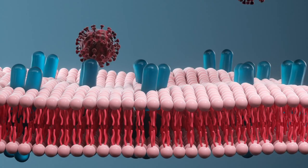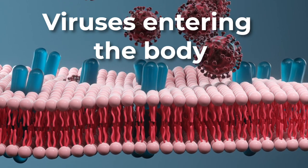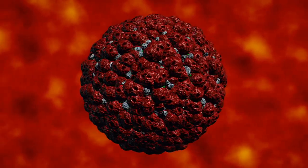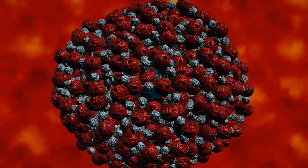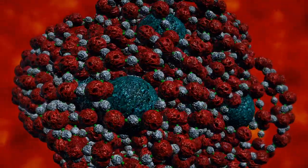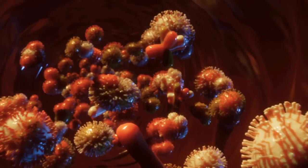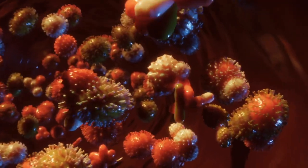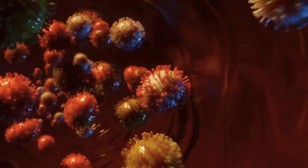Once inside the body, the viruses can multiply by attaching to and entering living cells inside the body. Once inside our cells, they use the cell's tools to reproduce and make more copies. These additional copies, when released, can go and infect more cells.